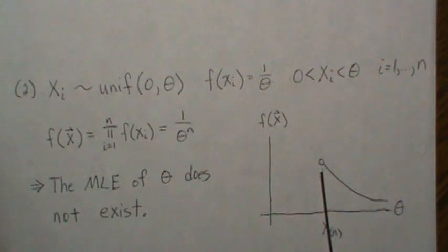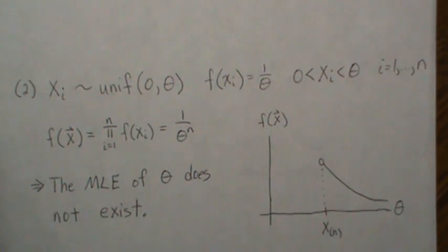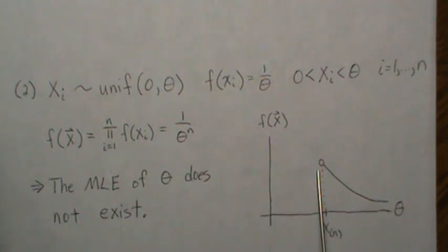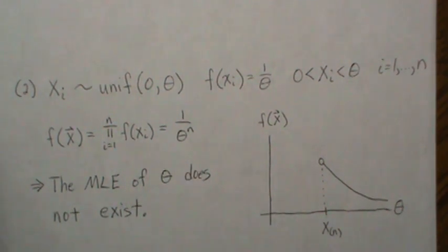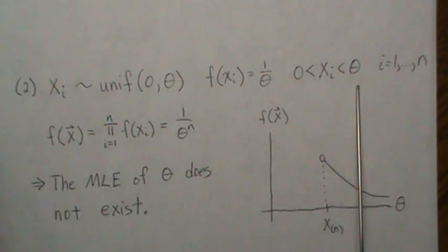And since theta has to be strictly greater than every data point, where is this maximized? Do you take the largest data point plus 0.1 or 0.05 or 0.005? There's no largest value in here. We know it doesn't go above the nth order statistic, but where is the likelihood maximized?